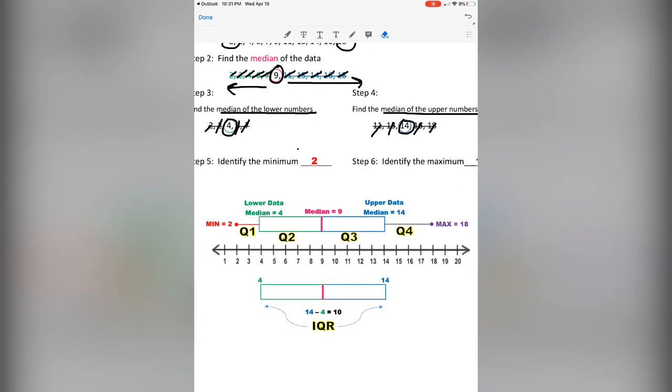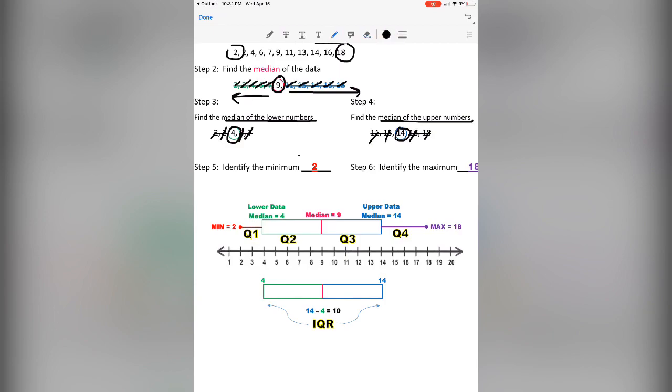Once all five pieces of data are represented on your graph, the graph begins split into four pieces. These are called quadrants. Quadrants stands for four. Each quadrant represents 25% of the data that is in our data set.